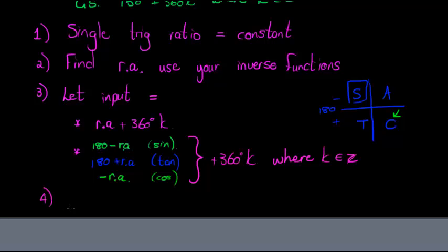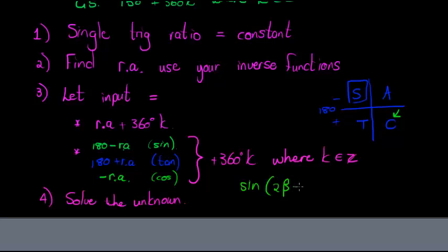The fourth step is to solve the unknown. For example, if your input was something like sine of 2 beta plus 10 degrees equals 0.7, you'll still have to solve for beta in your last step after completing the general solution. We'll look at a few examples later on.